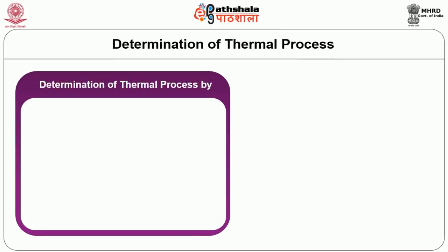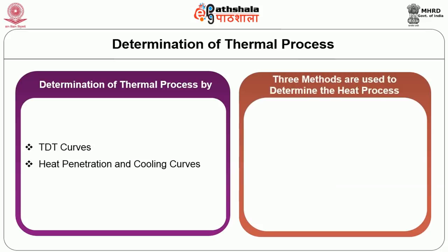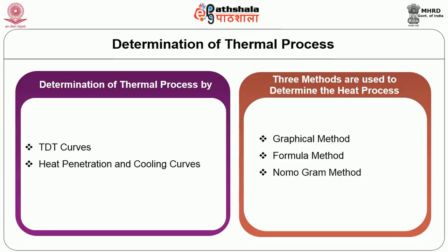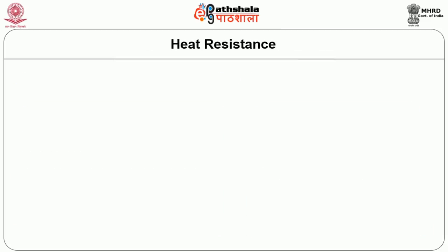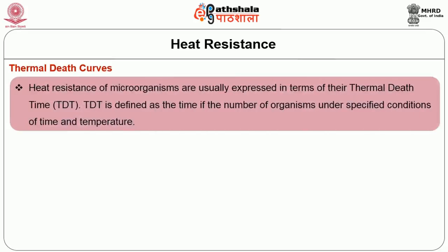Determination of thermal process is by TDT curves, heat penetration and cooling curves. Three methods are used: graphical method, formula method, and nomogram method. Regarding heat resistance: thermal death time (TDT) is defined as the time to reduce the number of organisms under specified conditions of time and temperature. It follows a logarithmic order of death, meaning that under constant thermal conditions, the same percentage of the bacterial population will be destroyed in a given time interval regardless of the size of the surviving population.